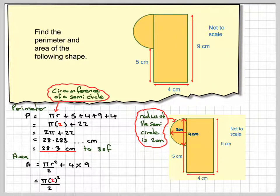Remember, r is 2, so it's going to be pi times 2 squared divided by 2 plus 36. 2 squared is 4, and 4 divided by 2 is 2, so we're going to end up with 2 pi plus 36.